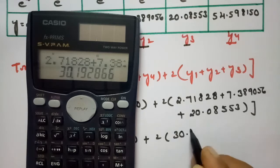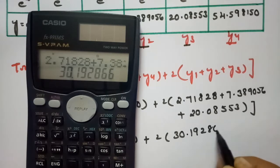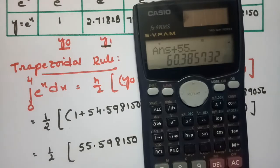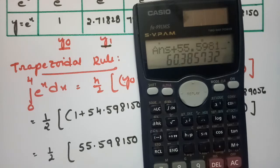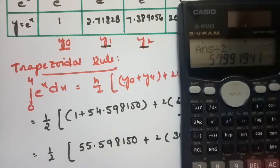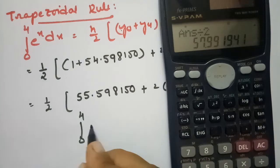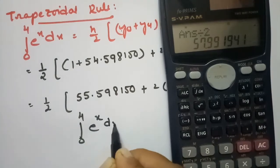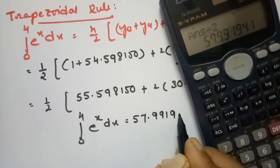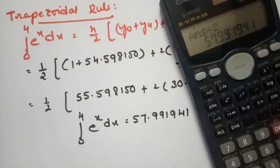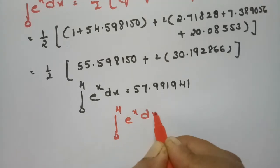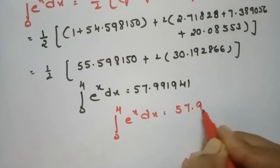The sum inside the 2× bracket is 30.192866, multiplied by 2, plus 55.598150, all divided by 2. The value of the integral from 0 to 4 of e^x dx is approximately 59.992.